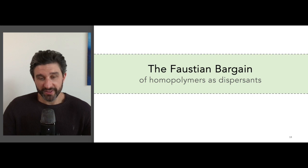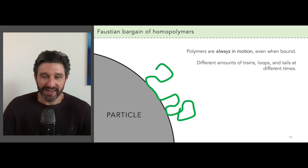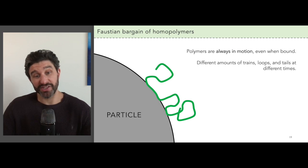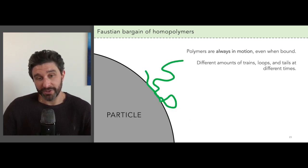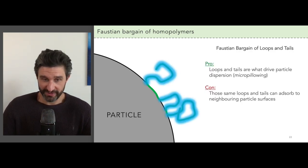Okay, so this is where we get to what I call the Faustian bargain of using polymers as dispersants. If we look back to the picture of the homopolymer adsorbed to a particle surface, we need to realize that the polymer is actually always in motion. And so the number of trains, tails, and loops changes over time. The Faustian bargain is about the dual nature of these loops and tails.